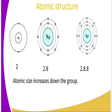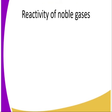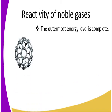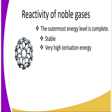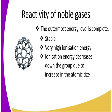The atomic size increases because there is an increase in the number of occupied energy levels. Noble gases are stable, and since they are stable, the outermost energy level is complete. This means very high ionization energy is required to remove an electron from the outermost energy level, making them highly unreactive.